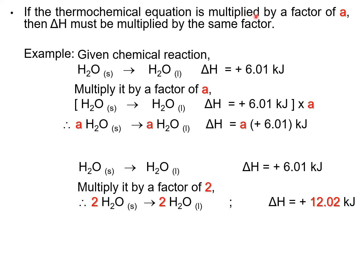What if you multiply the thermochemical equation by a factor? For example, if you multiply by a factor of 2, everything in the equation must be multiplied by 2. So you would get 2H₂O solid converting to 2H₂O liquid, and the enthalpy change becomes 6.01 × 2 = 12.02 kJ.